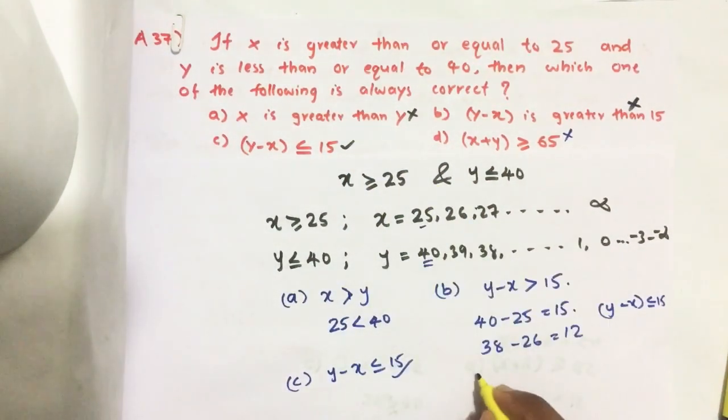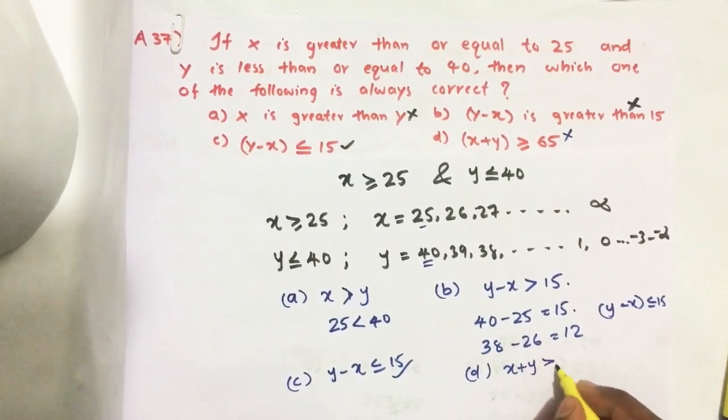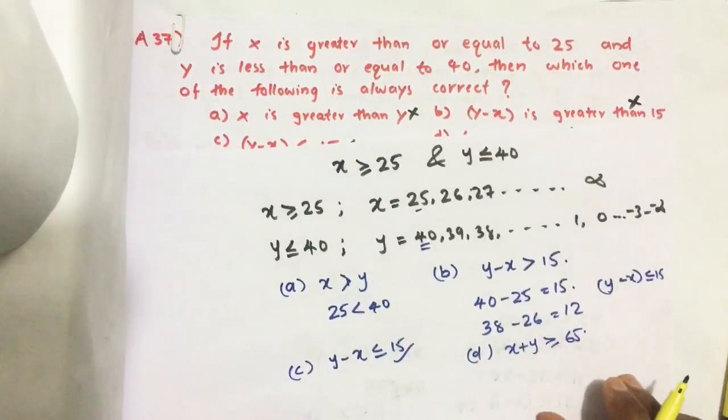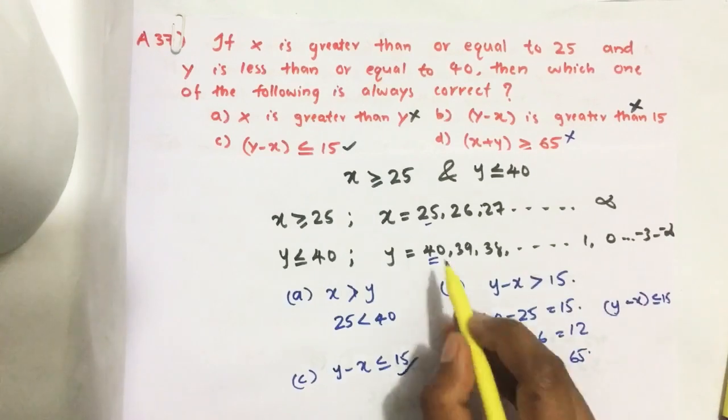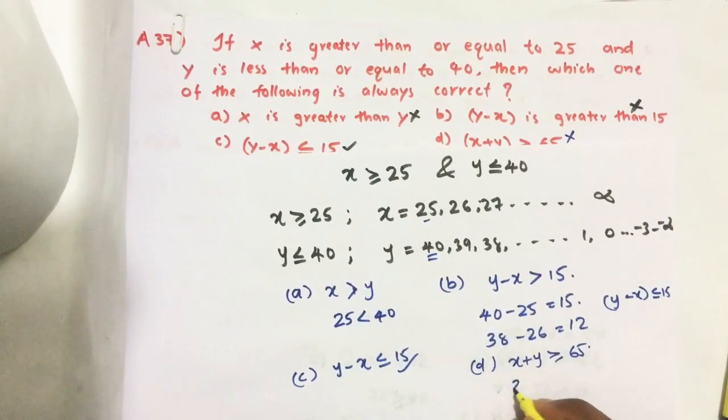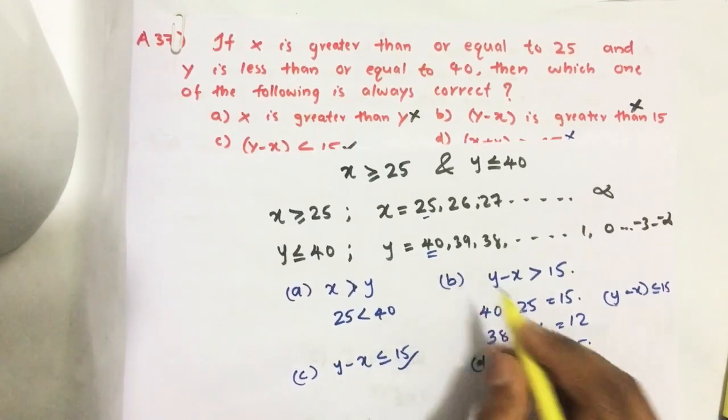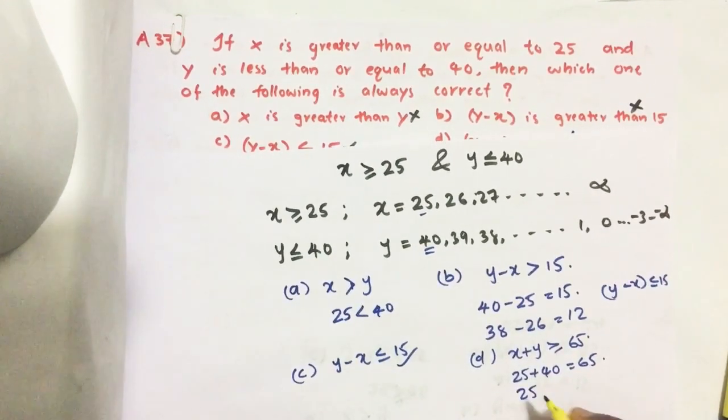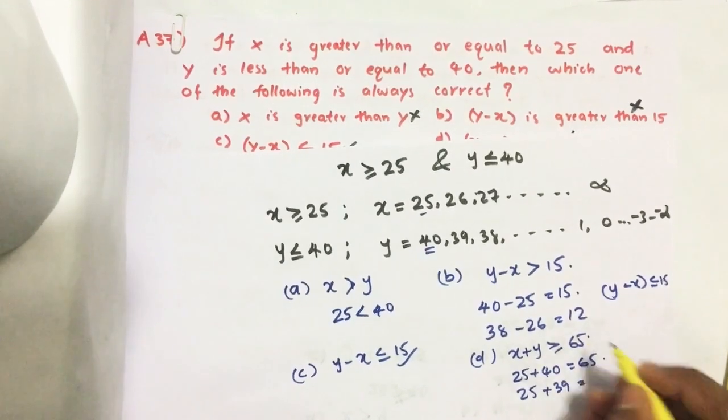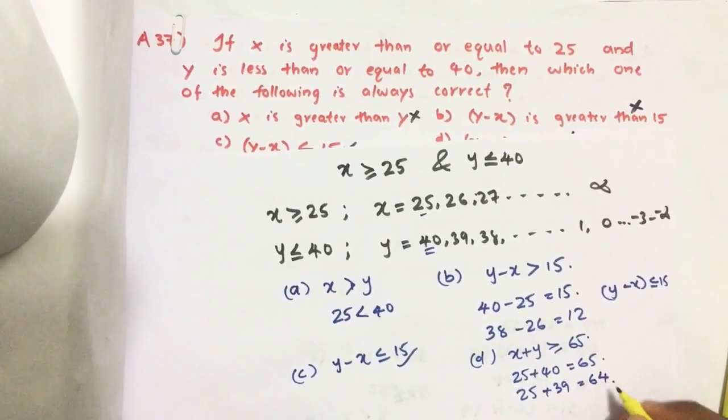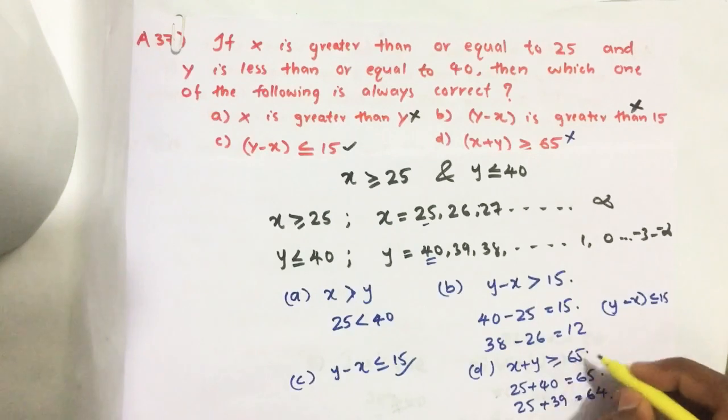Next, option D: X plus Y greater than or equal to 65. Let's give X equal to 25, Y equal to 40, we are getting 65 equal to 65. Next we give X equal to 25 and Y equal to 39, here we get 64. So this statement is also not true, so option D is also ruled out.